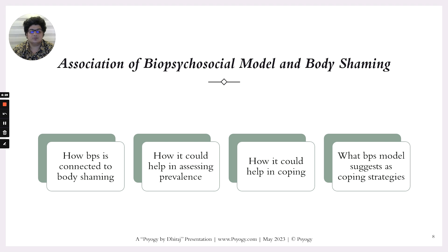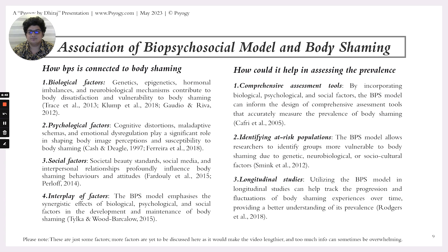Regarding the association of the biopsychosocial model and body shaming, we categorize this into four areas: how BPS is connected to body shaming, how it could help in assessing prevalence, how it could help in coping, and what coping strategies the BPS model suggests. Starting with how BPS is connected to body shaming — biological factors include genetic, epigenetic, hormonal imbalance, and neurobiological mechanisms.